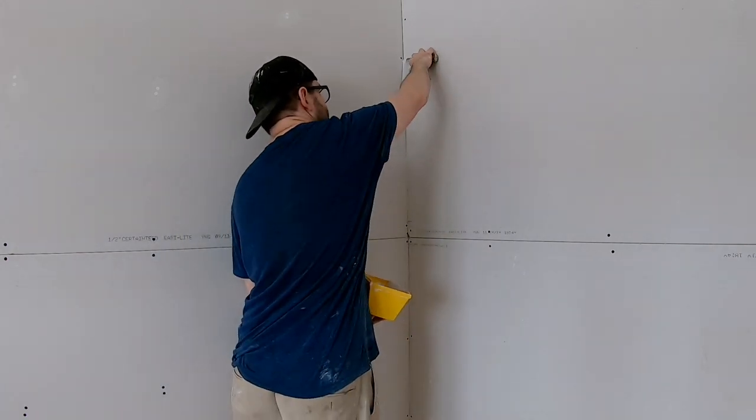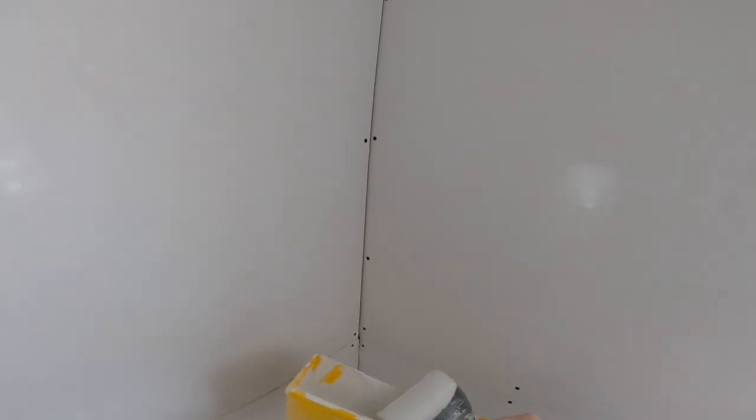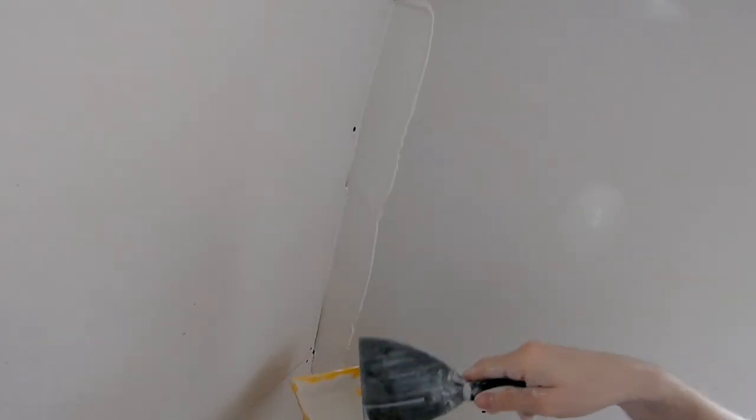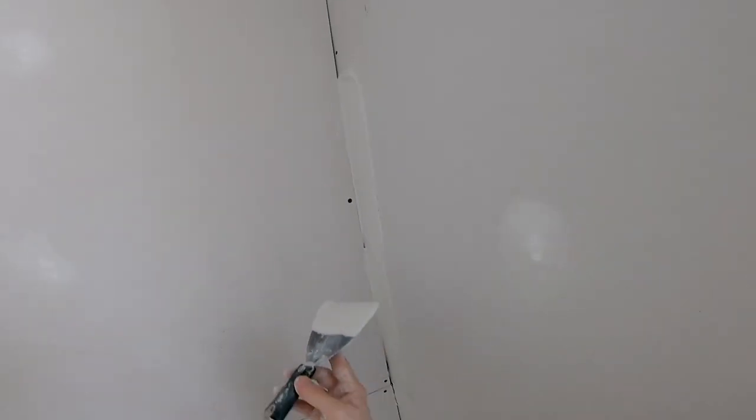I start on one side and I angle the knife like that and I run the knife down. So notice that my knife is completely parallel with the wall. It's not like this, it's not like that. It's just flat with the wall and that's how you're going to get the proper coat.